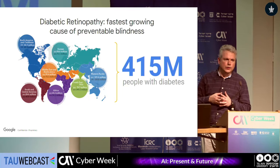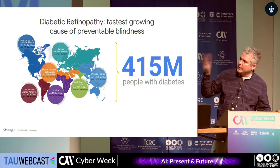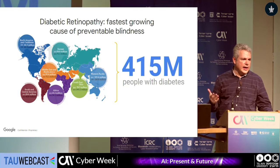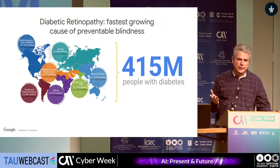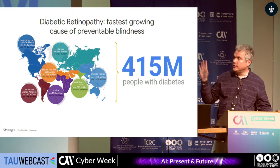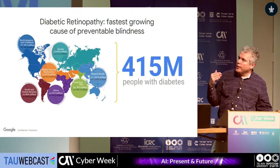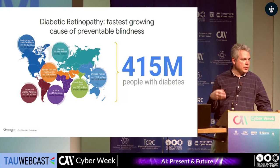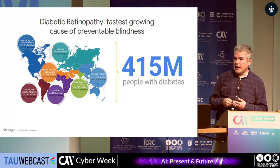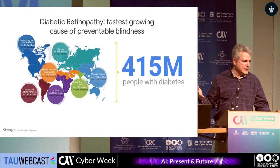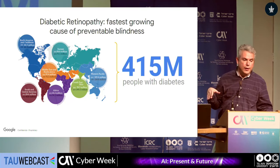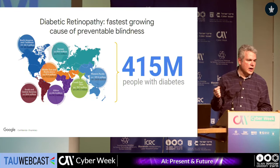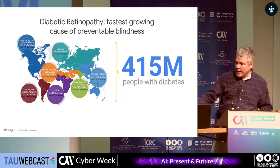Let me switch gears to the retina. First, let me talk about diabetes. This is the number of people with diabetes in the world — it's probably an underestimate. The current thinking is about 10% of people in the world will get diabetes, especially as diets change. About a third of diabetics get a condition called diabetic retinopathy, which is essentially a breakdown in the blood vessels in the eye. For about a third of those, it's vision threatening — so roughly a 1% prevalence disease — but it's the fastest growing cause of blindness in the world.